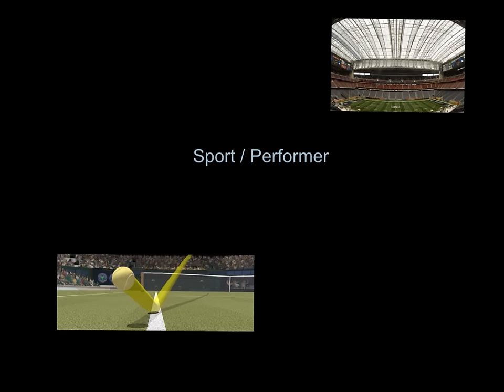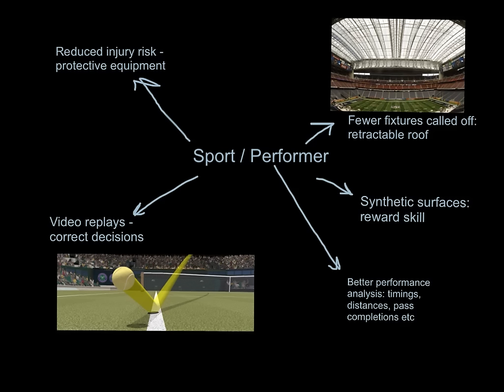Let's look at some advantages first — I'm going to write advantages in blue and disadvantages in red. In terms of advantages of technology for the performer, technology can be equipment we're wearing — helmets, shin pads, things like that — so we get reduced injury risk. That benefits the sport and the performer. We've also got things like Hawkeye and video replays. The big thing in football is goal line technology. With video replays we get correct decisions and no more farcical calls — that benefits performers and the sport.